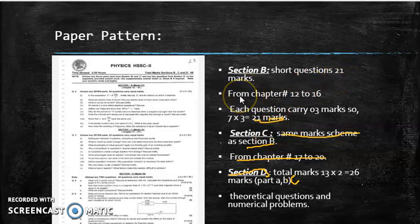The difference between section B and section C is basically the chapters from which the questions are taken. In section B, questions are taken from chapter number 12 to chapter number 16. But in section C, questions are taken from chapter number 17 to 20.